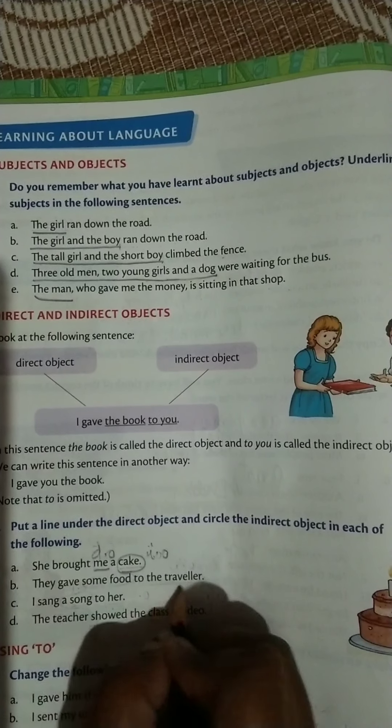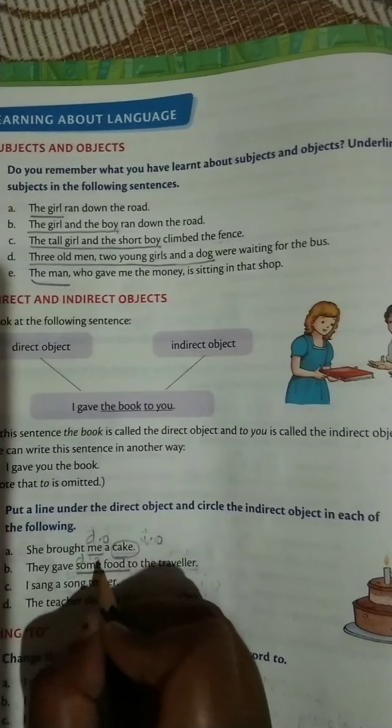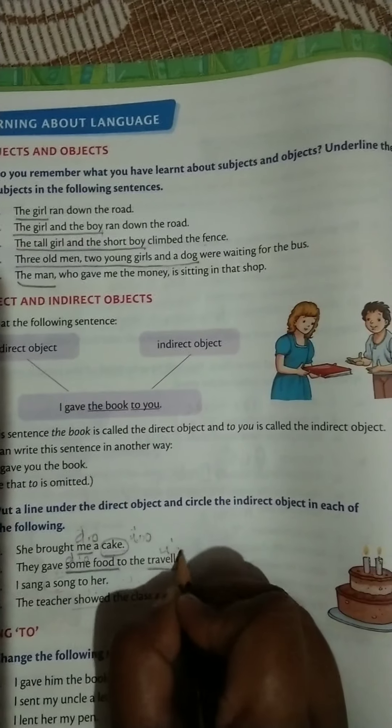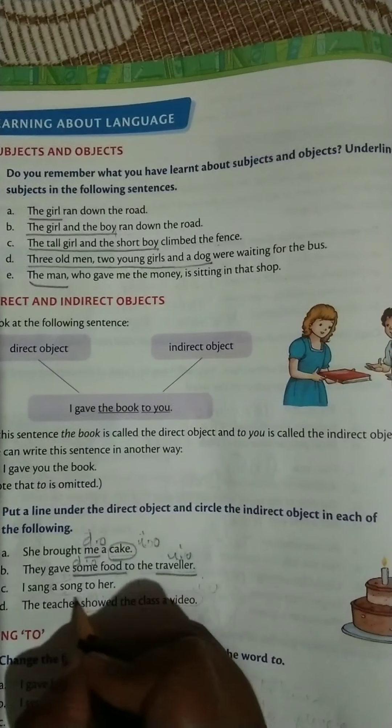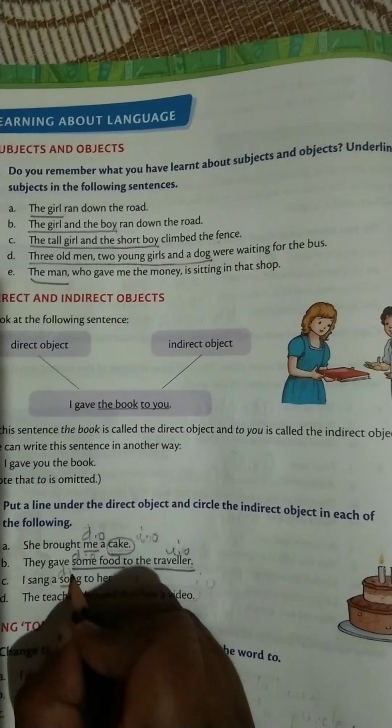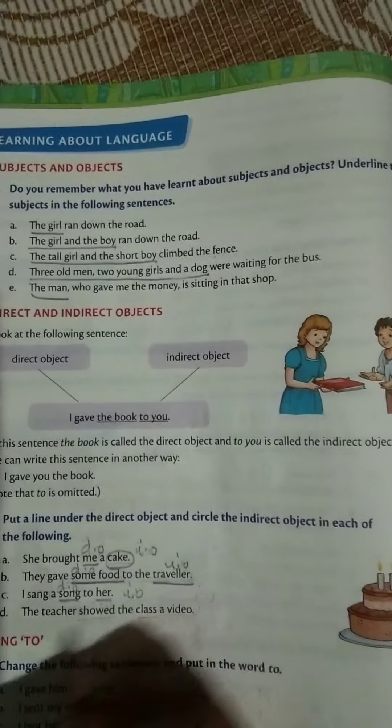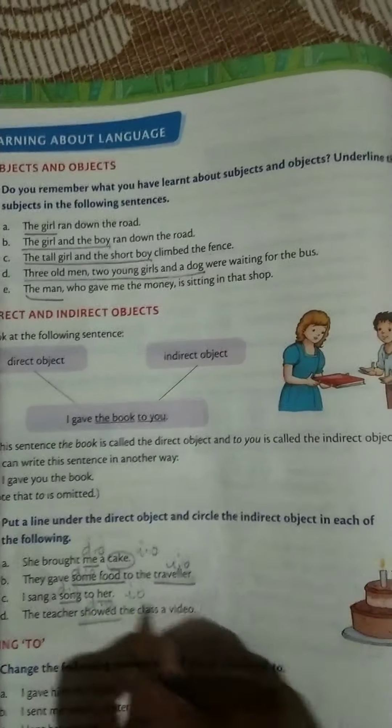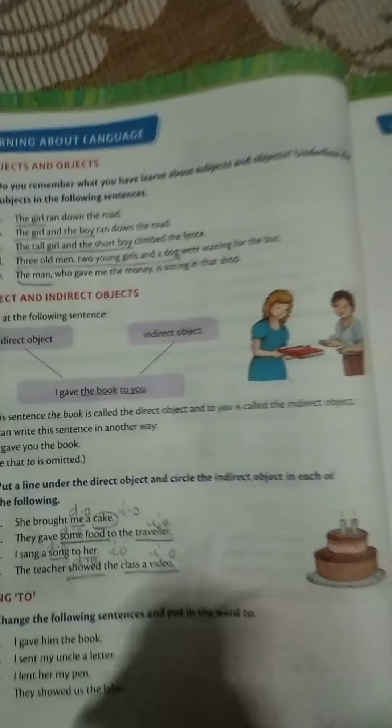Next, they gave some food to the traveler. So, some food is the direct object. So you put D.O. And traveler is the indirect object, so I.O. Come to the next. I sang a song - song is the direct object and her is the indirect object, I.O. The teacher showed - showed is the direct object and class of video is the indirect object.